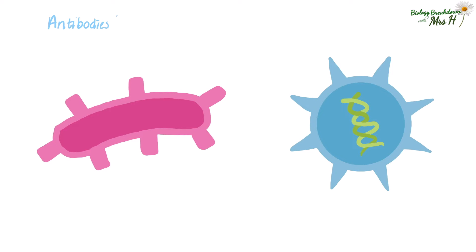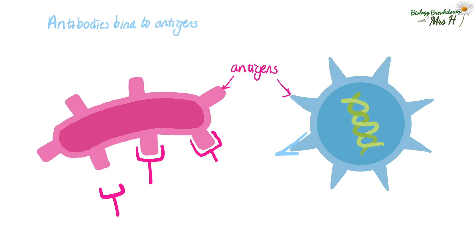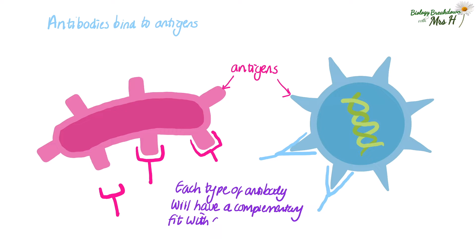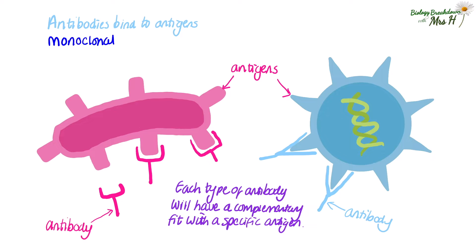Antibodies work because they can bind to antigens, and antigens are protein markers found on pathogens and infected cells. There are lots of different types of B lymphocytes, so there are going to be lots of different types of antibodies that can be made. Each type of antibody will have a complementary fit with a specific antigen, and scientists use this knowledge to make lots of antibodies in the lab which have a variety of uses in medicine. When you see the word monoclonal antibodies, the 'mono' bit just means there's one type and 'clonal' means there are lots of identical copies.